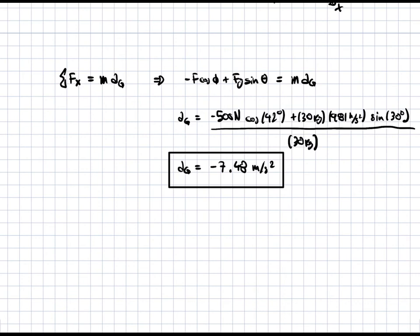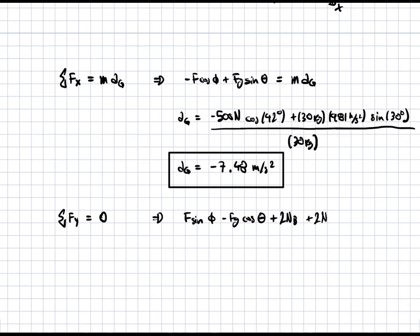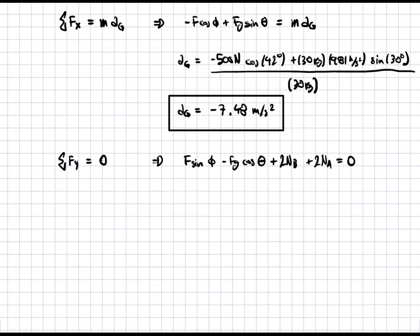Now for the sum of forces in the y direction, equal to zero, because there is no acceleration in the y direction: F·sin(phi) minus FG·cos(theta) plus 2NB plus 2NA equals zero. This equation has both NA and NB as unknowns, so we can't solve directly. We need another equation from the moment balance, then solve the system of two equations and two unknowns.